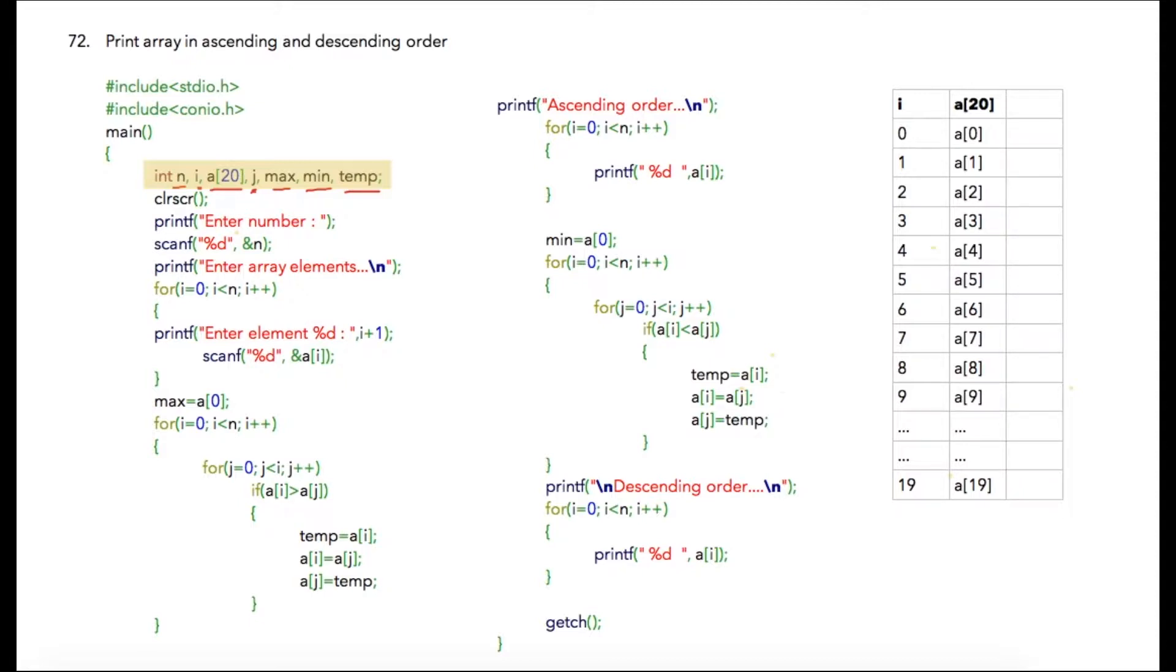I'm asking the user to enter n, which will be stored at the address location of n. Then I'm asking the user to enter all the array elements which will be stored at address location of a[i]. After that, I'm initializing a[0], the first element of our array, into max. We are initially assuming a[0] as the maximum value.